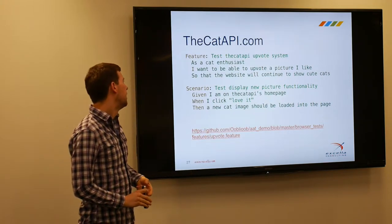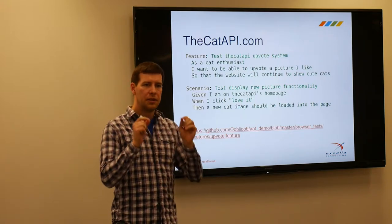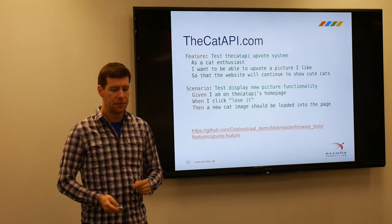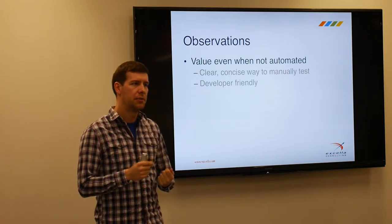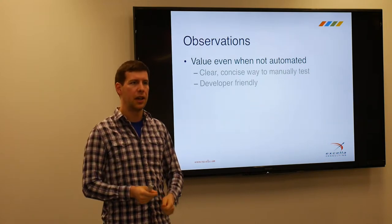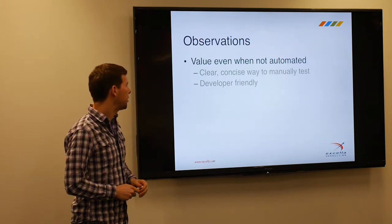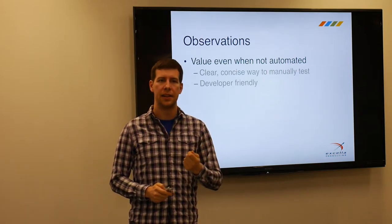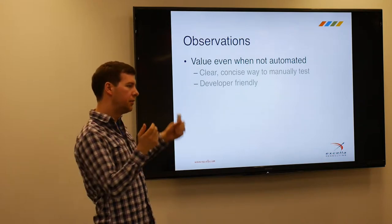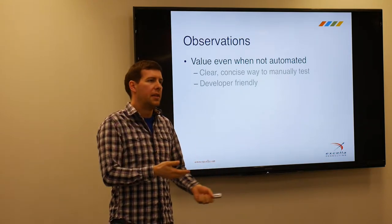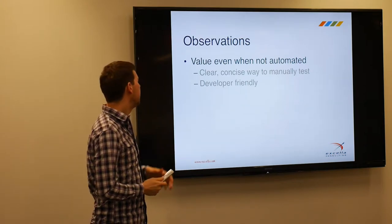Then we have a scenario with three key words: Given, When, and Then. Given is your setup or preconditions — things you want in place before running your action. When is what you're actually testing — whatever event you want to trigger. Then is your assertion or expected outcome. Here's a sample feature file: as a cat enthusiast, I want to be able to upvote pictures I like so that the website will continue to show me cute cats. Scenario: given I am on the cat API homepage, when I click 'love it,' then a new cat image should be loaded onto the page.